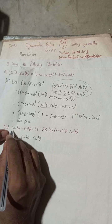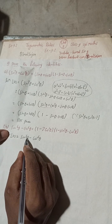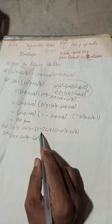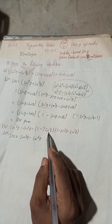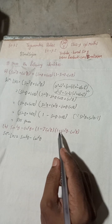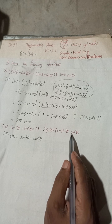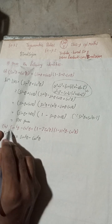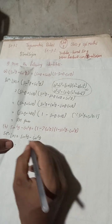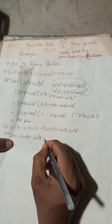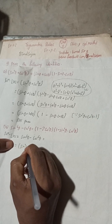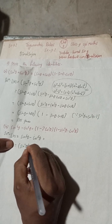LHS is equal to sin to the power 6 theta minus cos to the power 6 theta, which is equal to 1 minus 2cos²θ into 1 minus sin²θ cos²θ. We have to prove this, so I have taken the LHS. Now I can write sin⁶θ as (sin²θ)³.